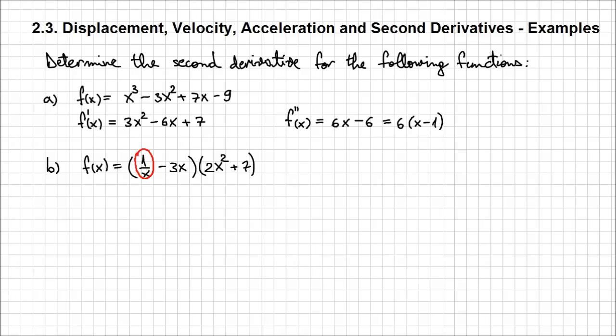which, as we know, we don't really have another way to approach it than take this quotient and express it as a power. And that's going to be x to the power -1. Let me explicitly write it again to get rid of this quotient. It's going to be x^(-1) - 3x times 2x² + 7.